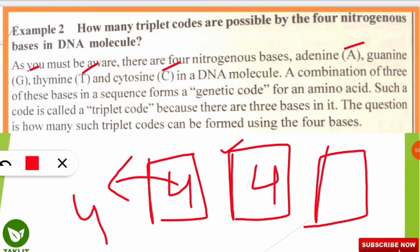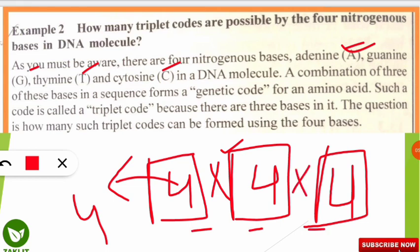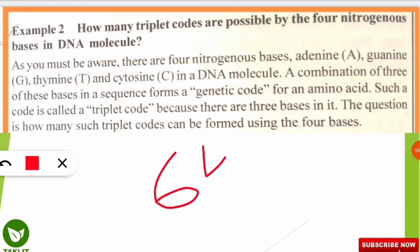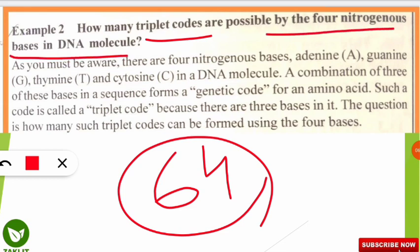In the third box also, 4 codons are possible. So we get 4, 4, 4 across the three positions. This is an AND case — meaning we must include one nitrogenous base in the first position AND one in the second AND one in the third. So we multiply: 4 × 4 × 4 = 64. Therefore, 64 triplet codes are possible using the 4 nitrogenous bases in DNA.